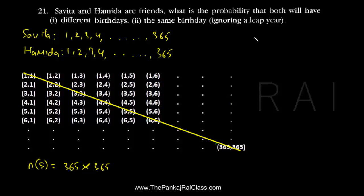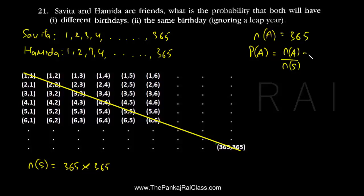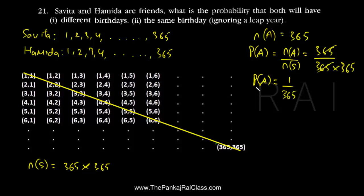Let's say the event is A. On all those days out of the sample space, they will be having a birthday on the same day. So the number of points in event A will be 365. The probability of event A, which we have defined as having the same birthday, would be the number of points in A upon the number of points in the sample space. That would be 365 upon 365 times 365. One of the 365s will get cancelled and we will have 1 upon 365. So that is the probability of both friends having a birthday on the same day.